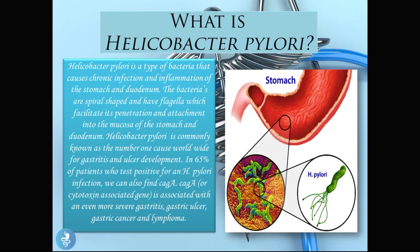In 65% of patients who test positive for an H. pylori infection we can also find CAG-A. CAG-A, or cytotoxin associated gene, is associated with even more severe gastritis, gastric ulcers, gastric cancer and lymphoma development.